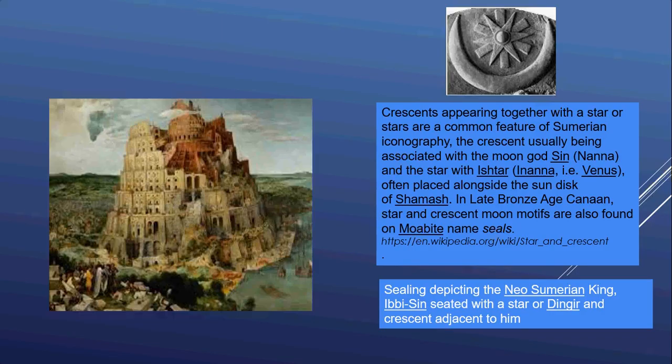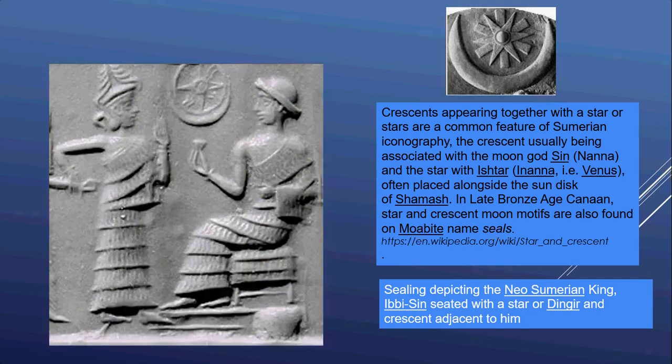Crescents have been appearing all the way back since the Tower of Babel. Here is a picture of the Sumerian goddess and god. The crescent is usually associated with the moon god Sin or Nanna, and the star with Ishtar/Venus, often placed alongside the sun disk, which is Shamash.